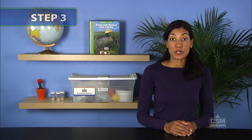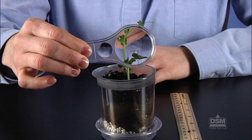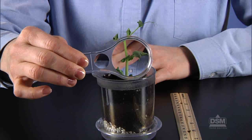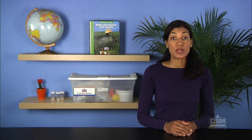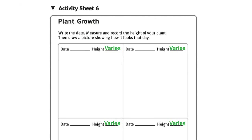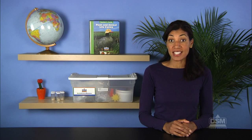Next, give each team of two a magnifier and a ruler and allow time to explore their plants. Students should observe the number and color of the leaves, the height, the width, and general appearance of their plants. Give each student a copy of Activity Sheet 6, tell them to record the date, and measure and record the height of their plants in the first box on their Activity Sheets. They should also draw a picture of their plant and add any additional useful information. When students have finished, instruct them to return the magnifiers and their plants to the designated area.